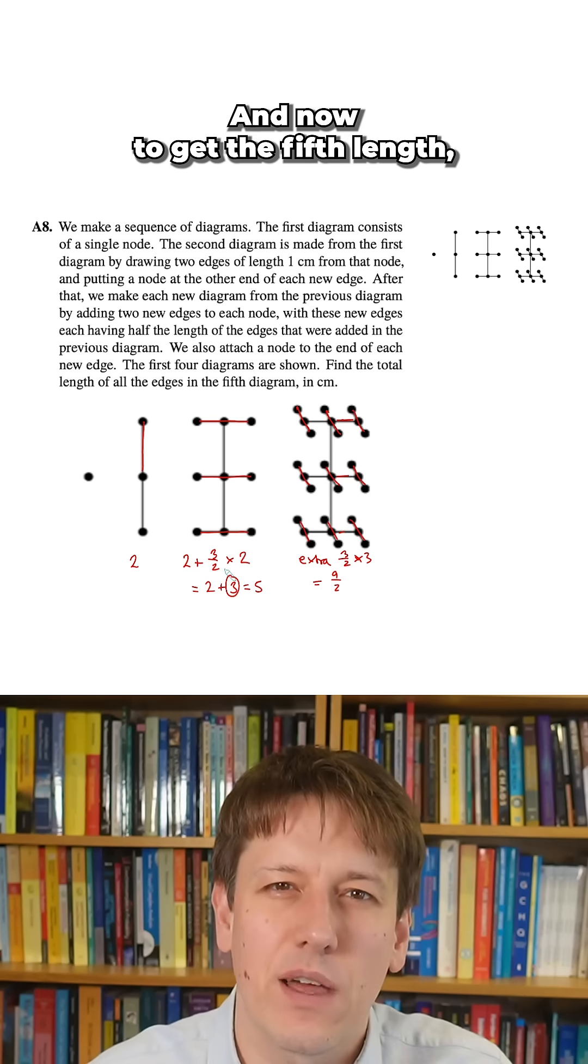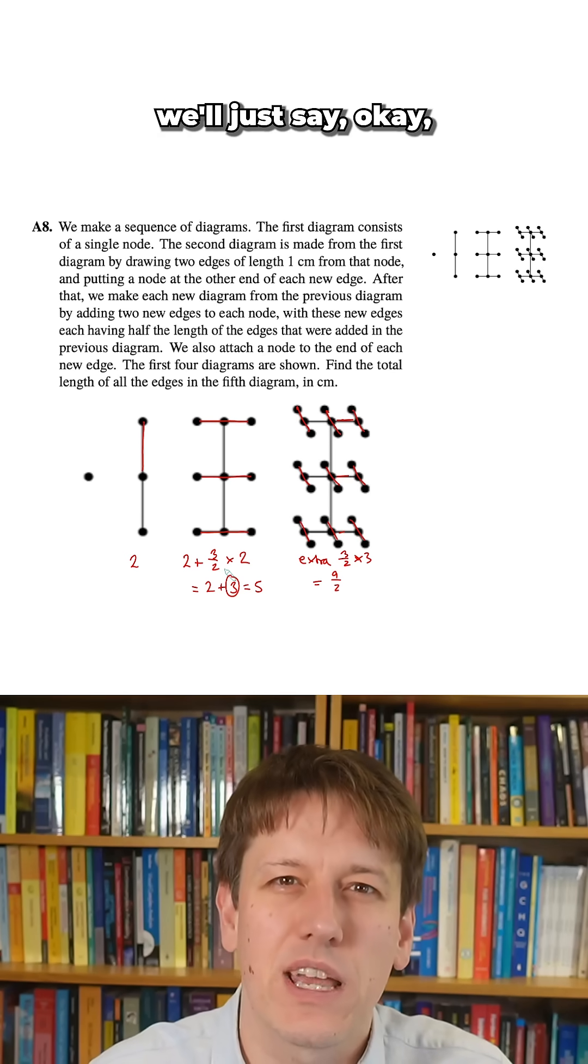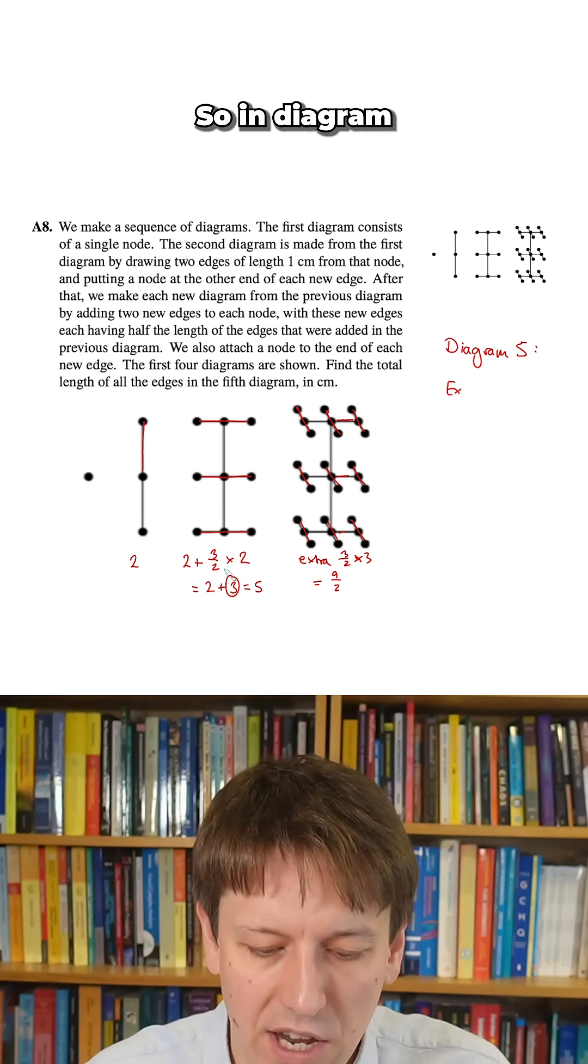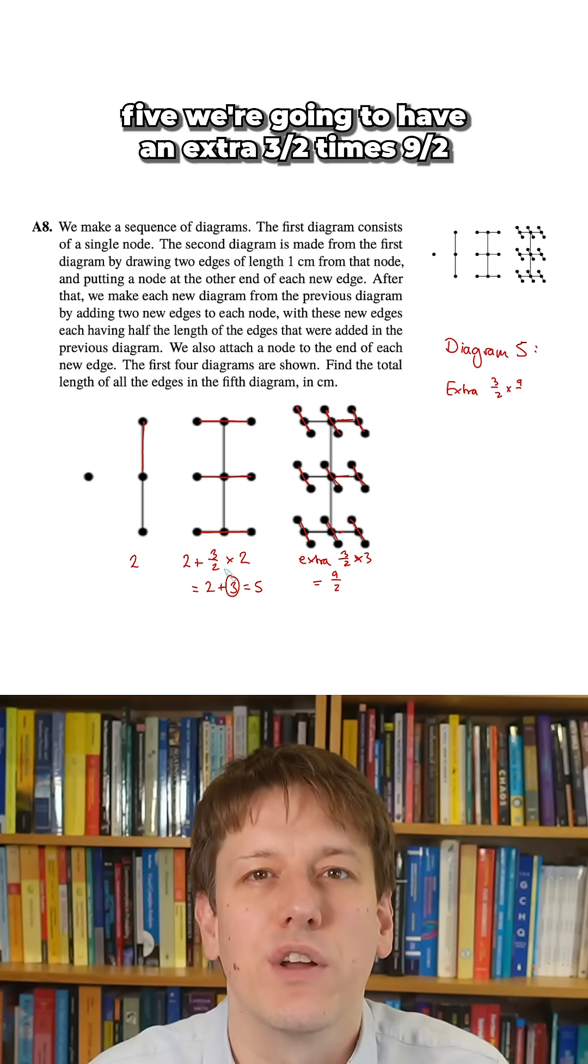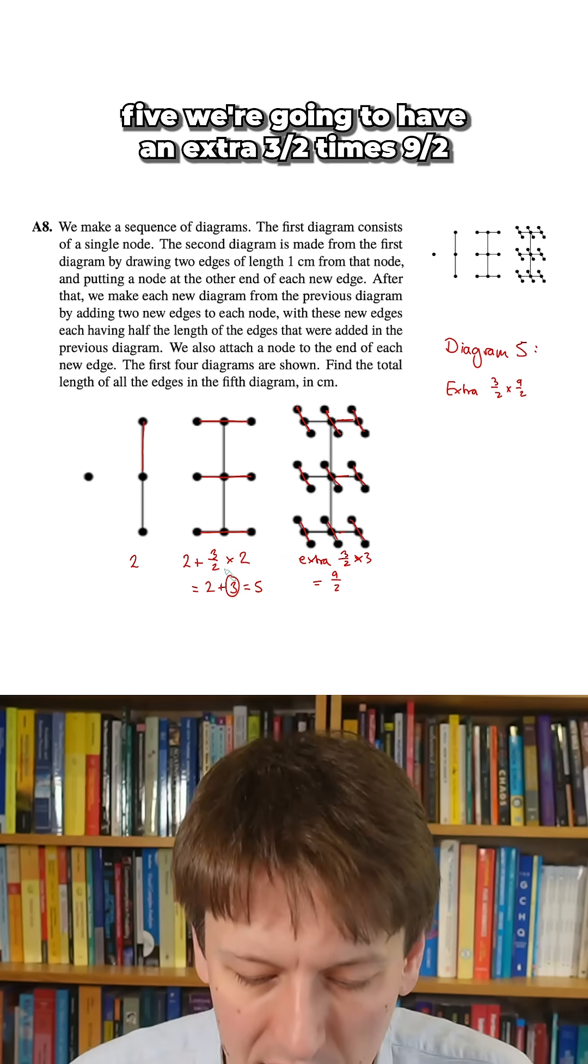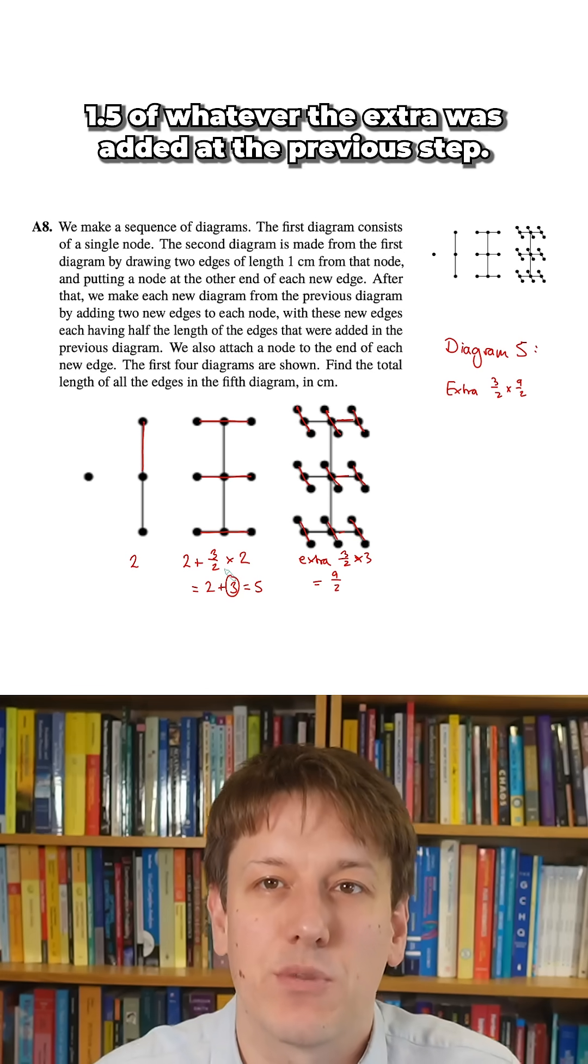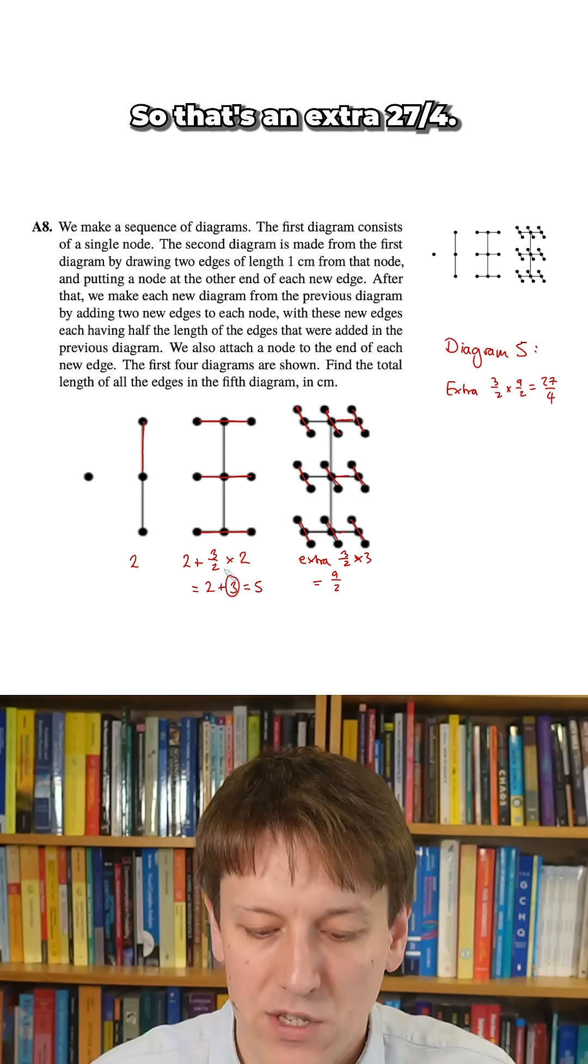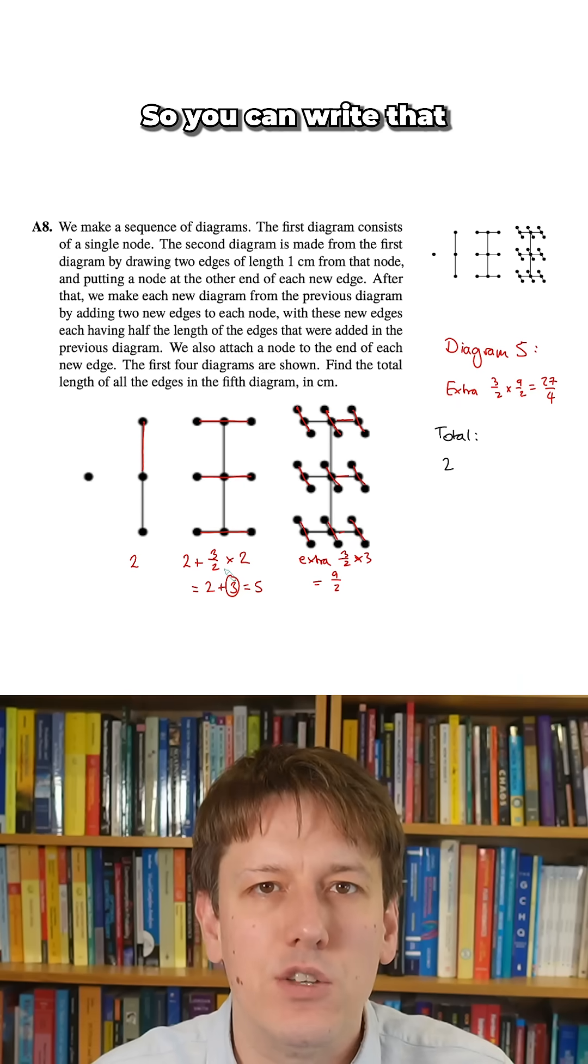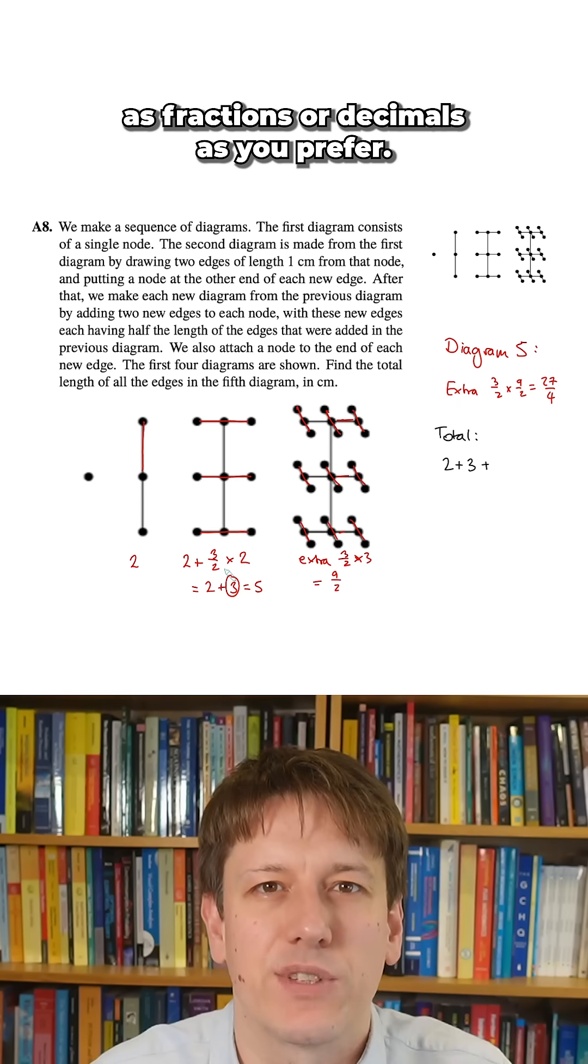And now to get the fifth length, rather than trying to draw it out, we'll just say the same principle is going to apply. So in diagram five we're going to have an extra three over two times nine over two. We're going to have an extra one and a half of whatever the extra was added at the previous step, so that's an extra 27 over four.